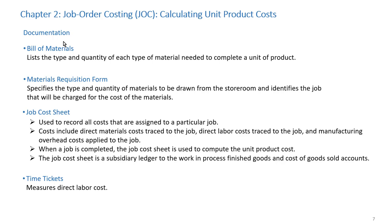Tracking both direct materials and direct labor costs is straightforward. Complications arise when trying to allocate manufacturing overhead to production. Manufacturing overhead includes all indirect costs, such as indirect materials, indirect labor, and factory operating costs. The challenge is how to best apply overhead costs to a product so that our costing and pricing decisions are accurate.